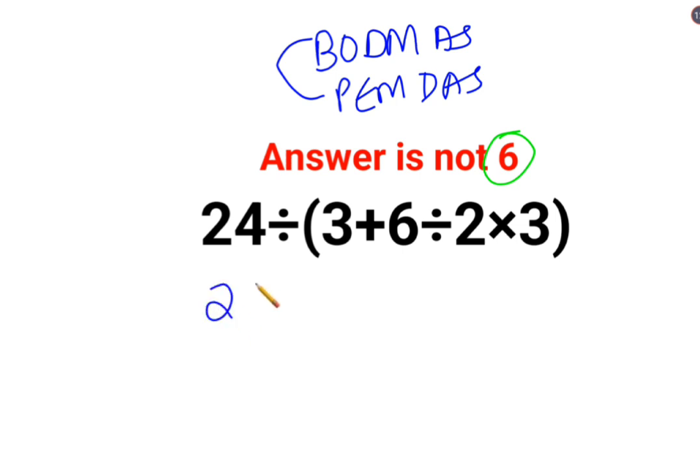So we have 24 divided by as it is, and in this bracket we have 6 divided by 2 multiplied by 3. So at this point, a lot of people made a mistake. Here, what they did was 6 divided by 2 multiplied by 3, so this is 3 plus 6 divided by 6.